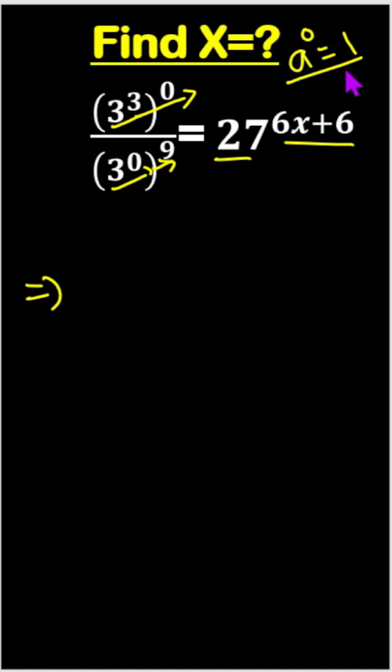So a^0 equals 1, which means (3^3)^0 ultimately becomes 1. Similarly, 3^0 means 1, and 1^9 also equals 1. So here we have 1.